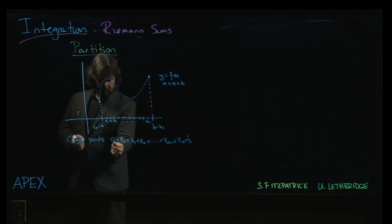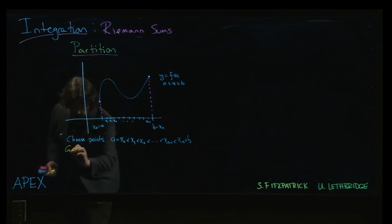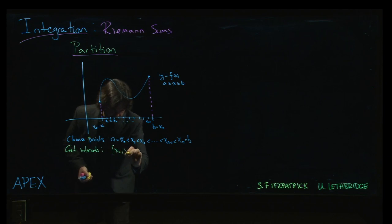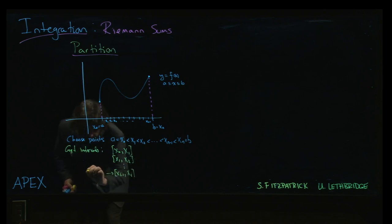Having chosen those points, you get intervals. We get the interval from x0 to x1. That's our first subinterval. Our second subinterval goes from x1 to x2, and so on. So we might talk about, say, the ith subinterval.